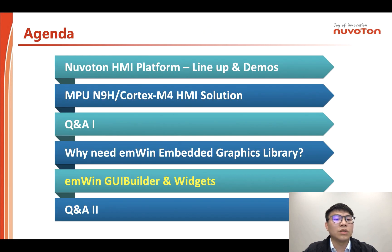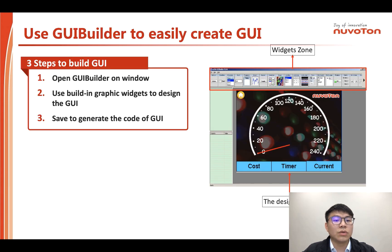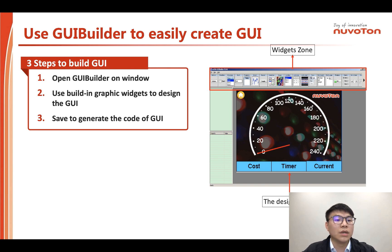We are going to introduce EMWIN GUI Builder and widgets. How do you use GUI Builder to easily create a GUI? The process includes only three easy steps: first, open GUI Builder on Windows; second, use the built-in graphics widgets to design your own interface; third, save and generate the GUI code.